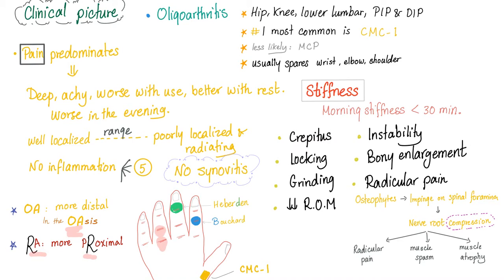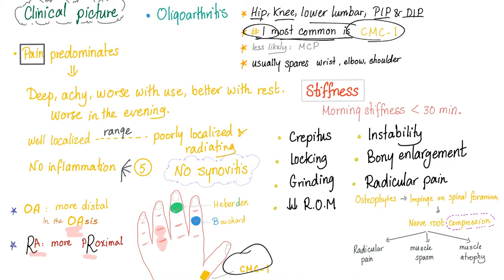Osteoarthritis affects the weight-bearing joints: hip, knee, lower lumbar, PIP and DIP. The number one most commonly involved joint is the first CMC — the carpometacarpal of the thumb. Less likely to affect the MCP, which is more characteristic of rheumatoid. Osteoarthritis usually spares the wrist, the elbow, and the shoulder — unlike rheumatoid arthritis.